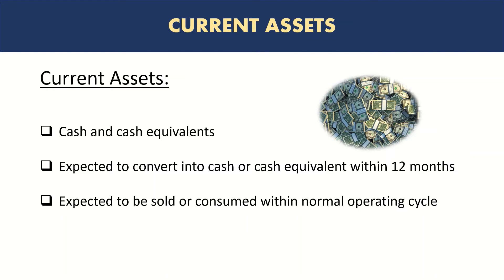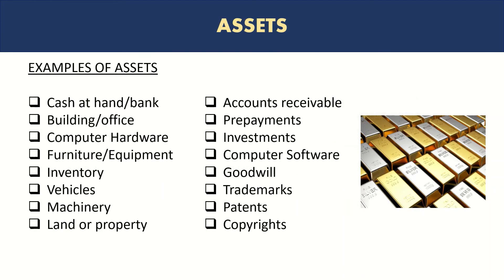The normal operating cycle is the business cycle — the average time it takes from buying a product and then selling it and receiving cash for it. If an asset is expected to be sold or consumed within the normal operating cycle, this refers mainly to inventory, the stock, as it is converted in the normal conversion cycle. It also refers to accounts receivable — the amount due from customers — which is usually converted into cash within the normal operating cycle.